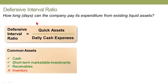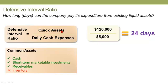The defensive interval ratio answers the question: how long can the company pay its expenditures from existing liquid assets? The numerator is quick assets — the same as in the quick ratio: cash, short-term marketable investments, and receivables. The denominator is daily cash expenses. Dividing quick assets by daily cash expenses gives an estimate of how many days the company can cover operations. In our example, $120,000 in quick assets divided by $5,000 daily cash expenses means the company could continue paying operating expenses for about 24 days before running out of quick assets.